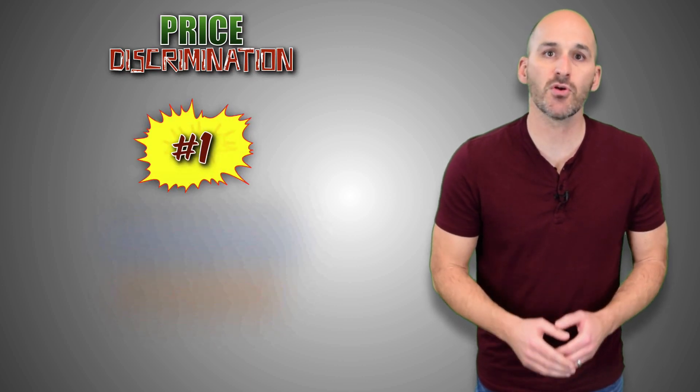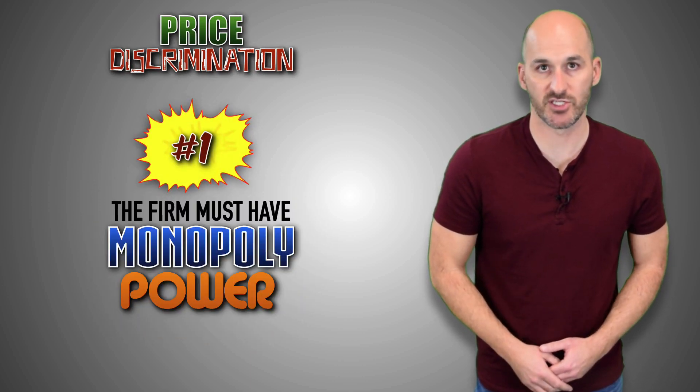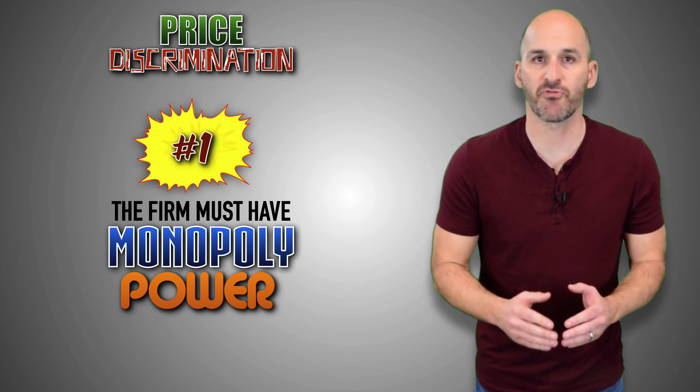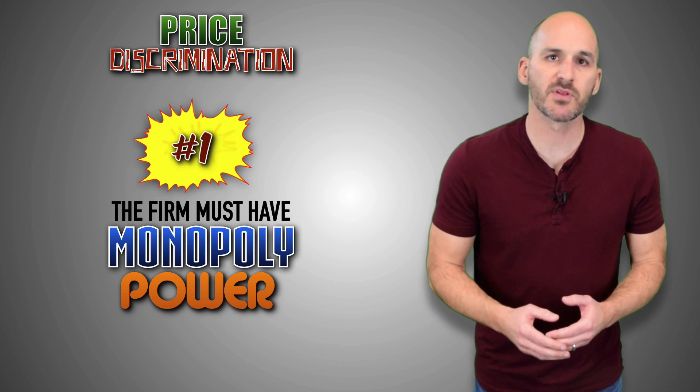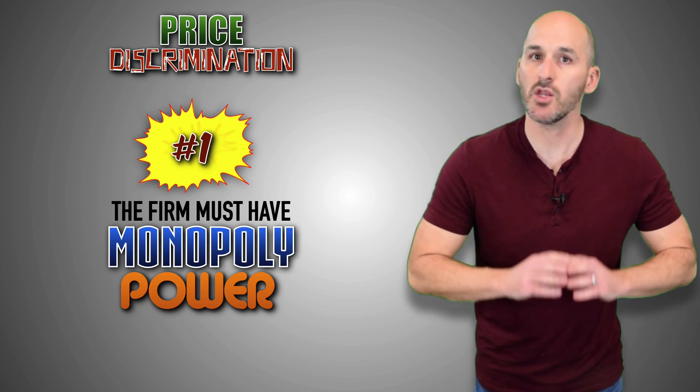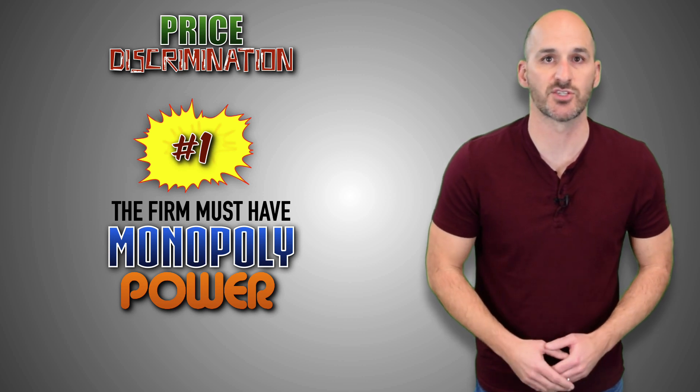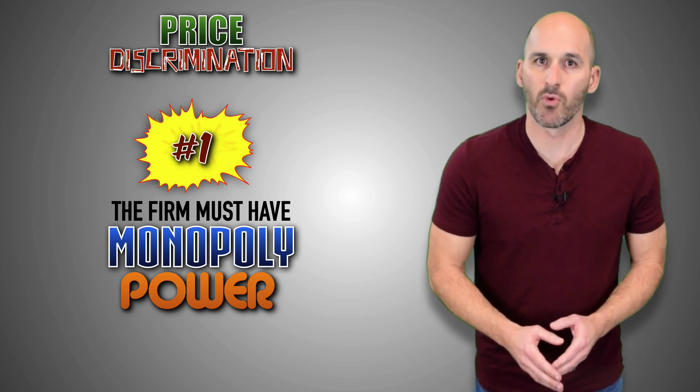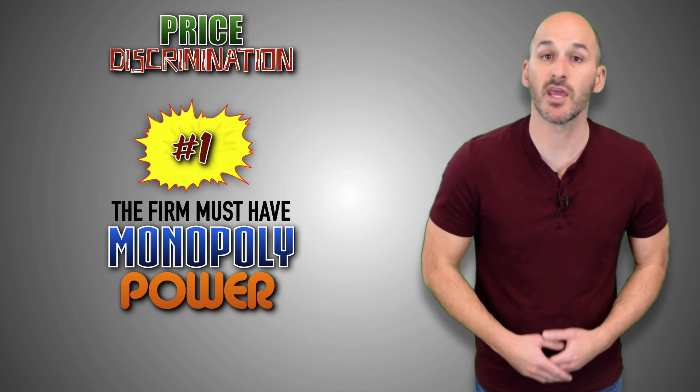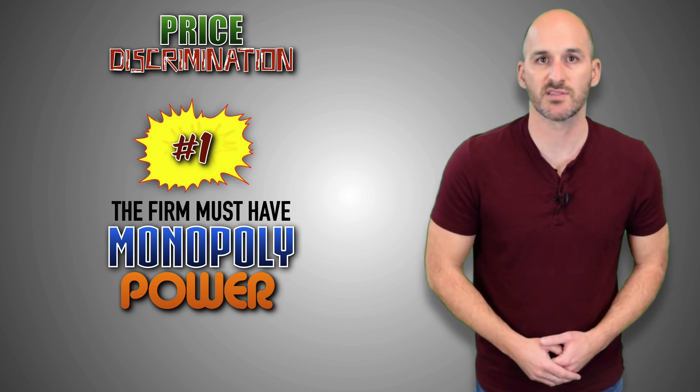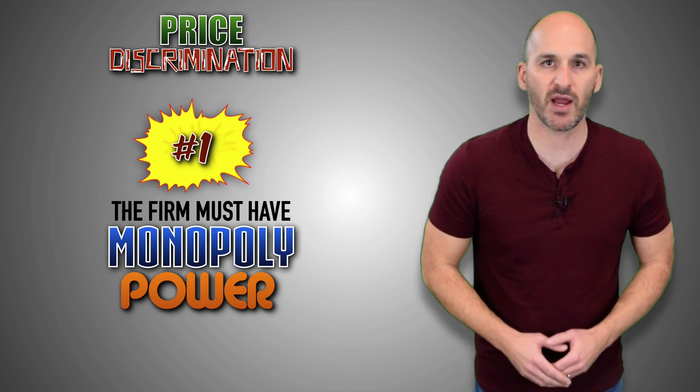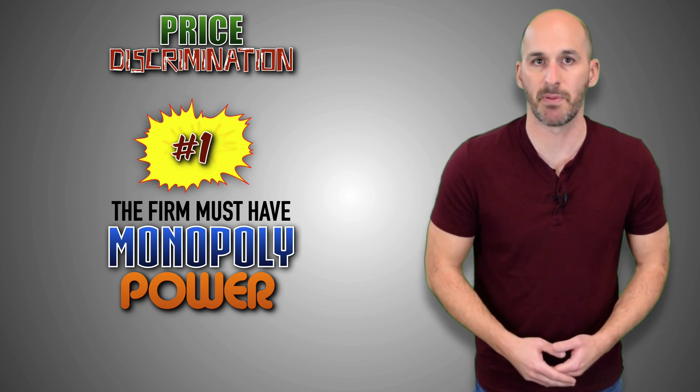The first is that the firm must have monopoly power in the industry. The market conditions of a monopoly are perfect for price discrimination. A monopolist sells a completely unique product, so there are absolutely no substitute goods in the industry. Furthermore, with no other firms to turn to, consumers must buy from the monopolist in order to meet their needs and wants. This makes it possible for the firm to charge different prices based on a consumer's willingness and ability to pay.